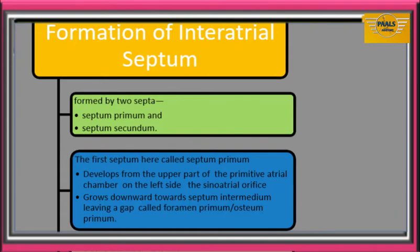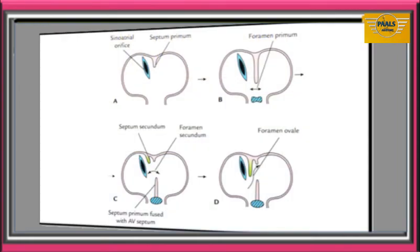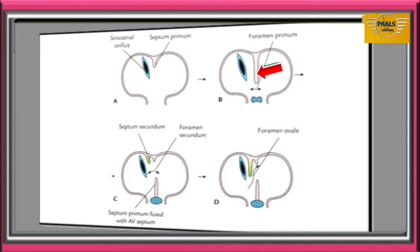The next septum we will consider is the interatrial septum — a septum that divides the primitive atrium into the right and left atria. It will be formed by septum primum and septum secundum. The first septum, called septum primum, is crescent in shape and starts the partitioning of the primitive atrium. It starts developing from the upper part of the primitive atrial chamber on the left side of the sinuatrial orifice — which is the opening of the sinus venosus into the primitive atrium. This septum will then grow downwards towards septum intermedium, also called the AV septum.